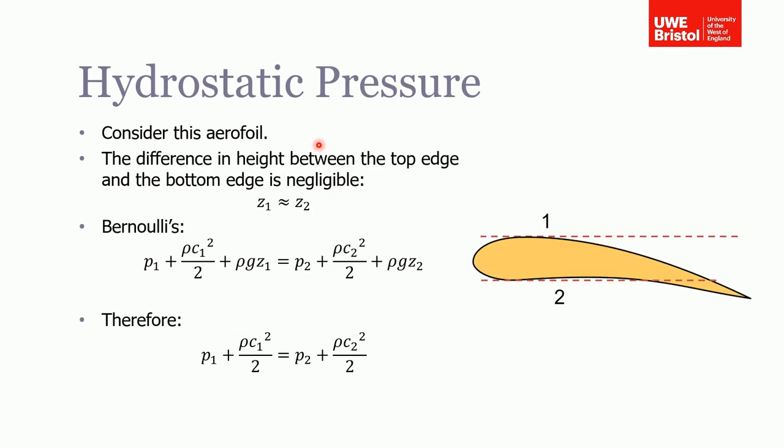If we think about the hydrostatic pressure terms in the equation, this is a good example. Consider the aerofoil—an aircraft wing traveling through the air. We can also use Bernoulli's to solve this. It might not be immediately obvious because the last two examples had the same fluid going from one point to another.